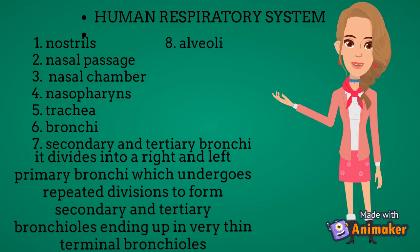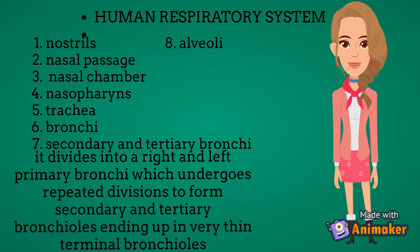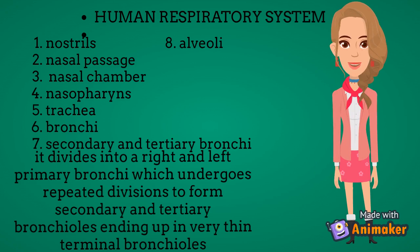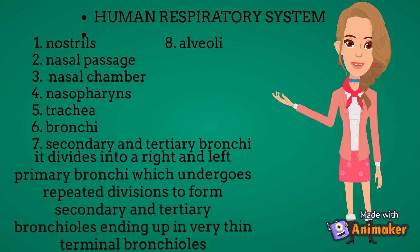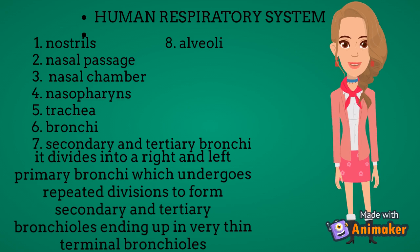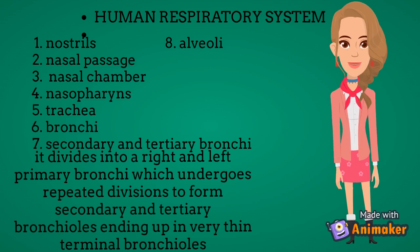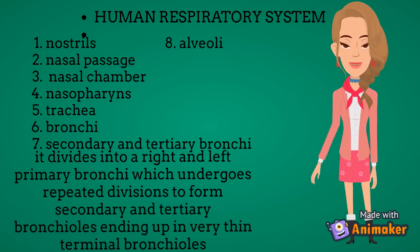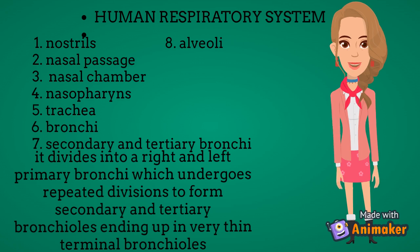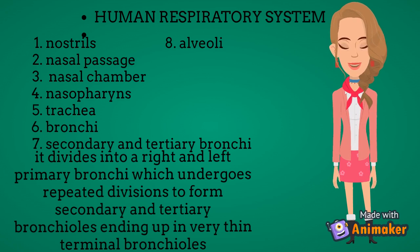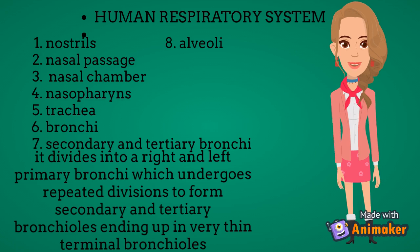The terminal bronchioles give rise to a number of very thin, irregular-walled, and vascularized bag-like structures called alveoli. The branching network of bronchi, bronchioles, and alveoli comprises the lung. The lung is covered by a double-layered pleura with pleural fluid between them, which reduces friction on the lung surface. The outer pleural membrane is in close contact with the thoracic lining, whereas the inner pleural membrane is in contact with the lung.